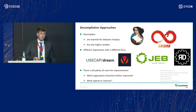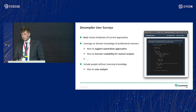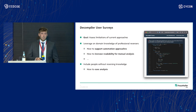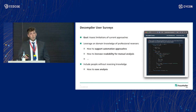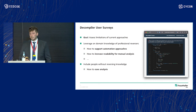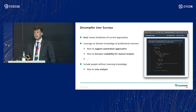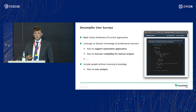We leveraged domain knowledge of all kinds of people, asking two main questions: how can we support automated approaches that analysts are already using or working on, and how to increase readability for manual analysis. At Fraunhofer, we believe you can only automate things to a certain extent and oftentimes have to resort to manual analysis eventually. This is why we aim at both: not only supporting automation, but also and especially manual analysis. We also included people without reversing knowledge but with programming knowledge, because ultimately we want a decompiler that allows people even without reversing skills to analyze real-world malware, thereby increasing the number of analysts and samples that can be analyzed.